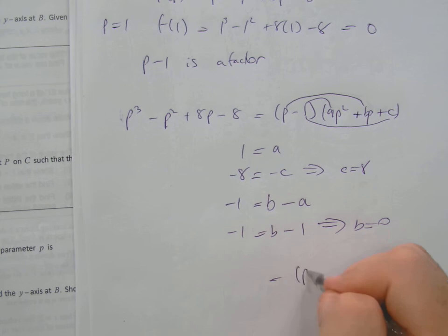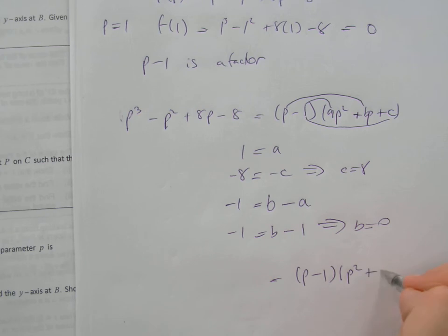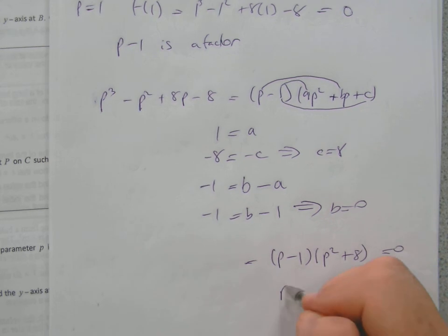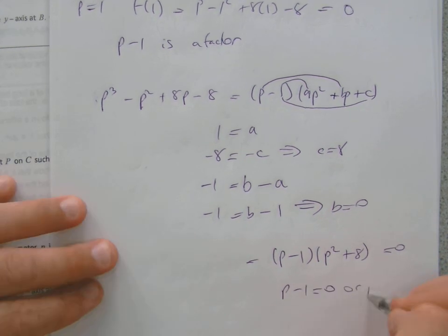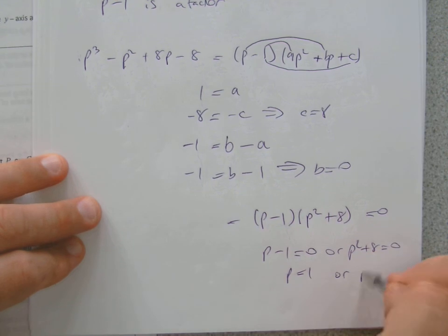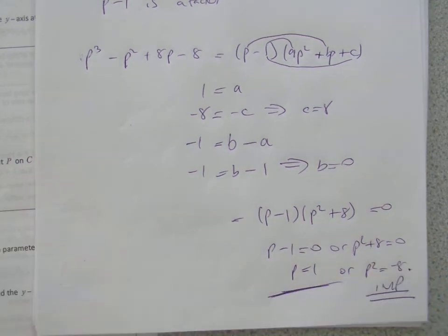So our answer will be p minus 1, A is 1, p squared, B is 0, plus 8. That's really nice, because now if we put this equal to 0, p minus 1 equals 0, or p squared plus 8 equals 0. So p equals 1, or p squared equals minus 8. This is impossible because you can't square with negative. Therefore, there's my answer, p equals 1.